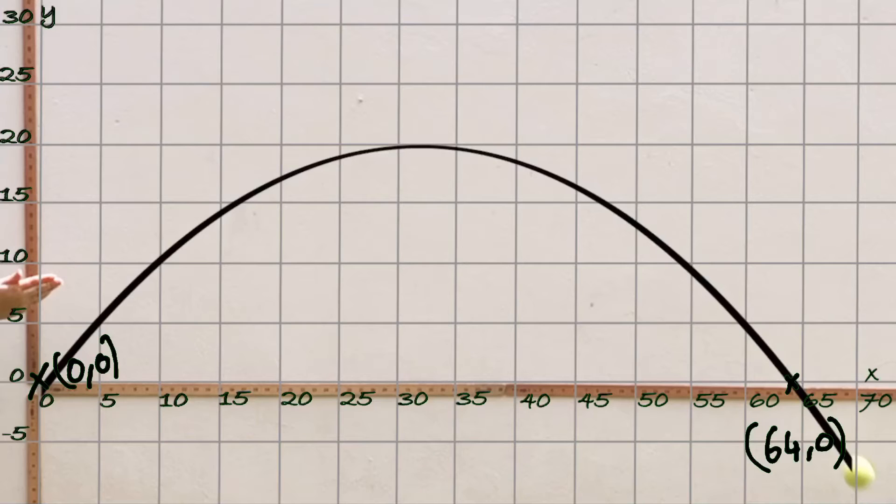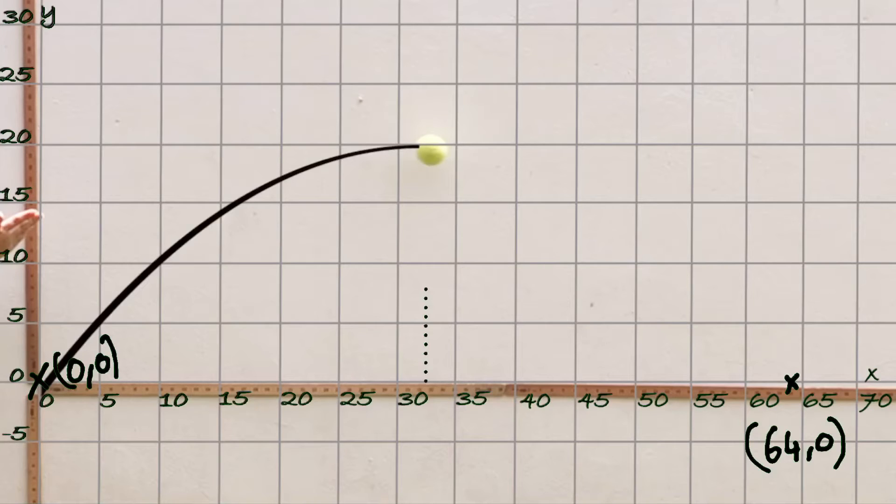What we want to look at is the vertex, which is the highest point that the ball travels. I think the highest point is probably about here, which if we look down to the x-axis is probably about 32, and then that goes to the y-axis about 20. So it cuts the x-axis about 32 and the y-axis about 20. That would be our third point at (32, 20).